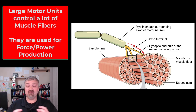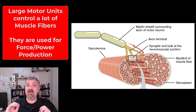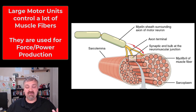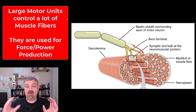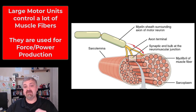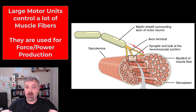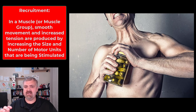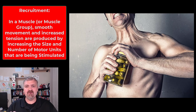Large motor units can control hundreds or even thousands of muscle fibers — power generation. So if I'm going to stand up from this chair or run, I need to generate a lot of force, and I'm going to use large motor units. Small motor units are used for fine motor control; large motor units are used to generate power. That ties into the last point I want to cover: the idea of recruitment.